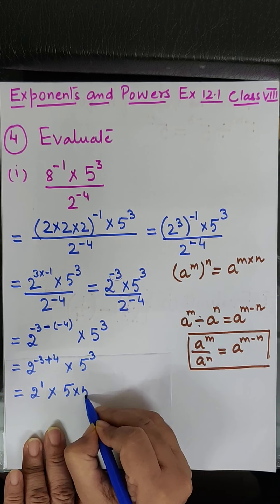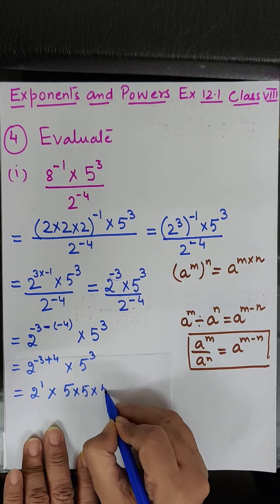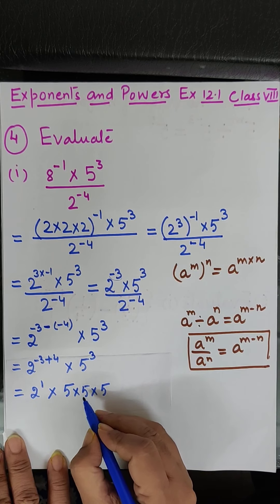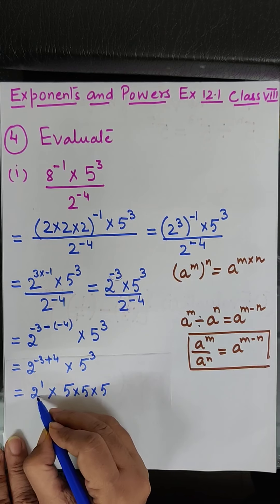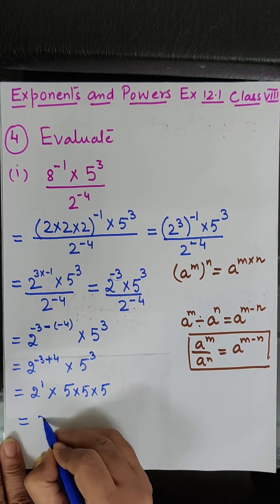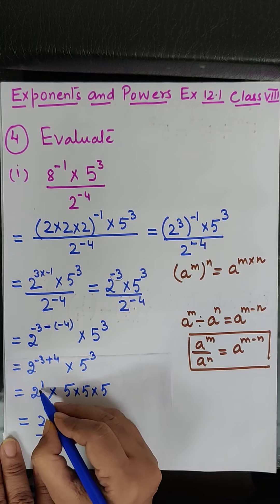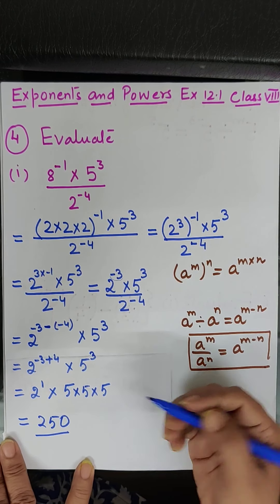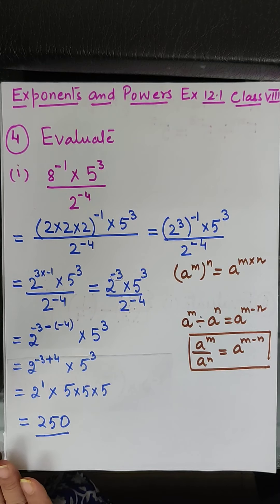5 to the power 3: 5 into 5 is 25, 25 into 5 is 125. And 125 into 2 is 250, because 2 to the power 1 is 2. So the answer is 250. Is it clear?